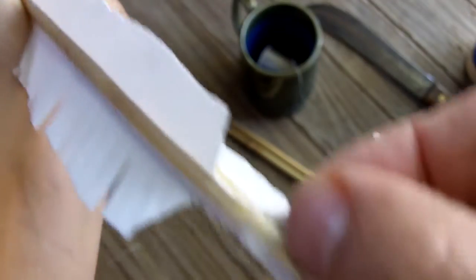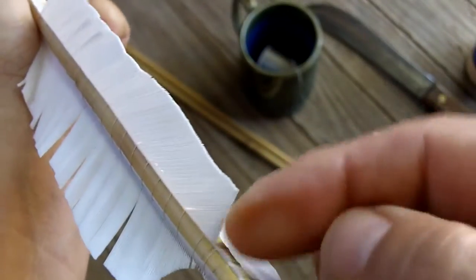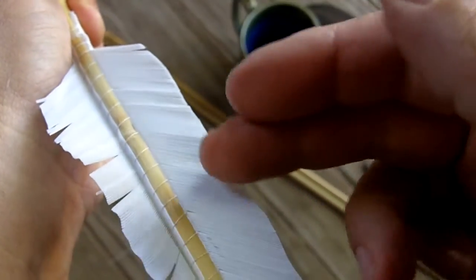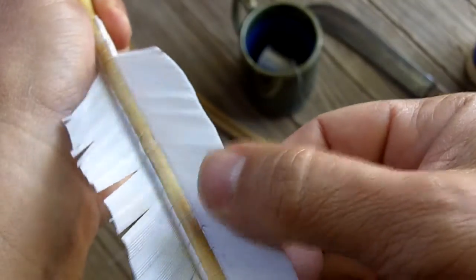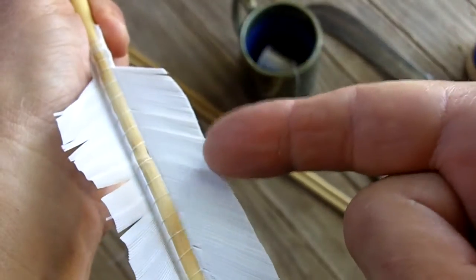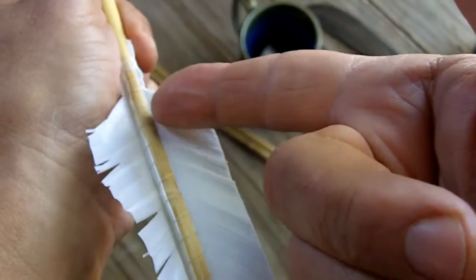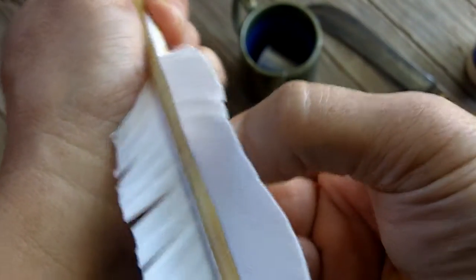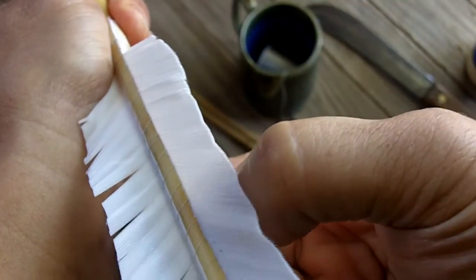Forgive me if I don't know the right terms for all this. I think these are called the veins here, these upright portions. So I'm going to call these the veins, the membrane at the bottom, and the feather as a whole I should be calling a fletch.